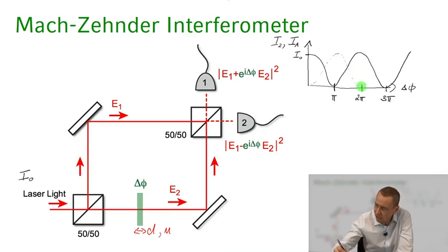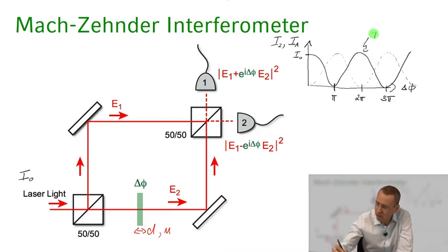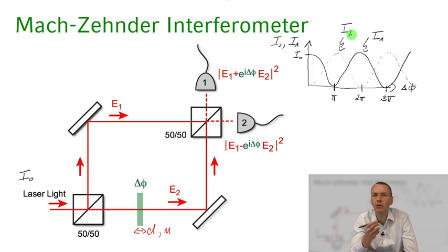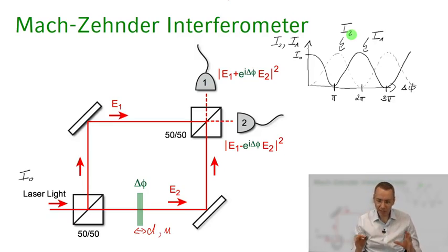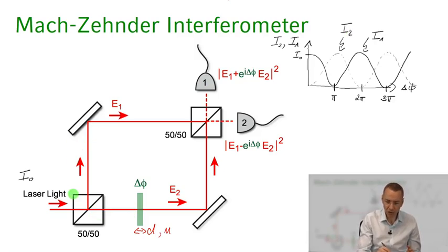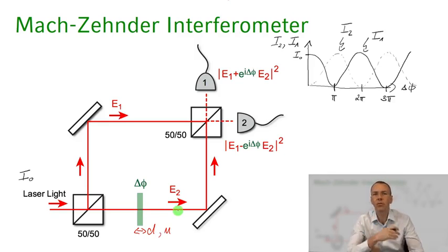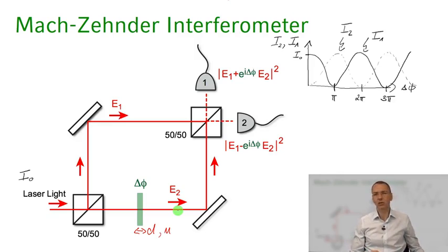The intensity on detector one and on detector two are just π out of phase — they are the two complementary outputs of the interferometer. What makes this interferometer powerful is two input ports, two paths with a coherent superposition of fields along the two arms, and two output ports to probe the relative phase of those fields. That's exactly the situation we want to realize for our atoms.